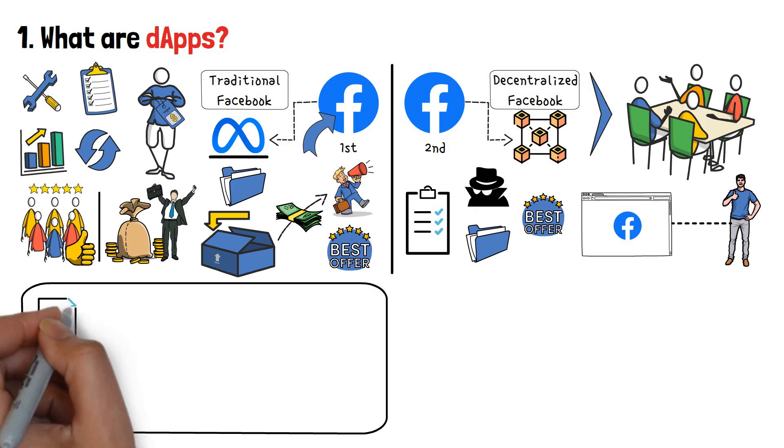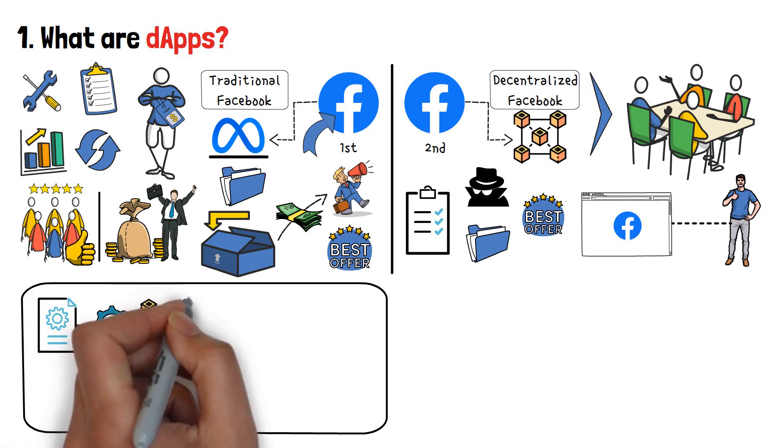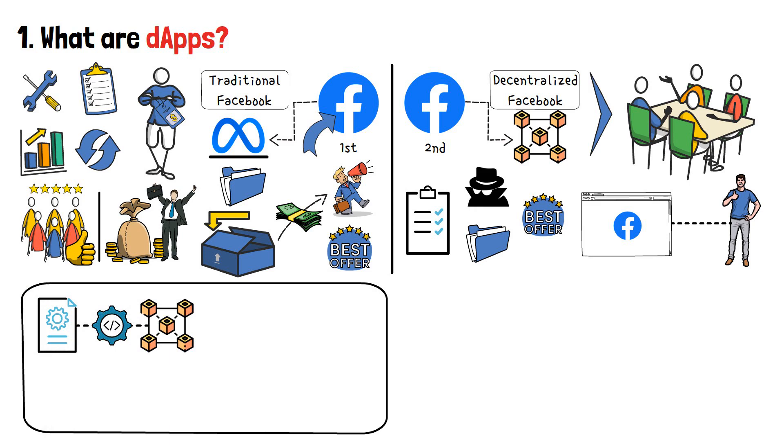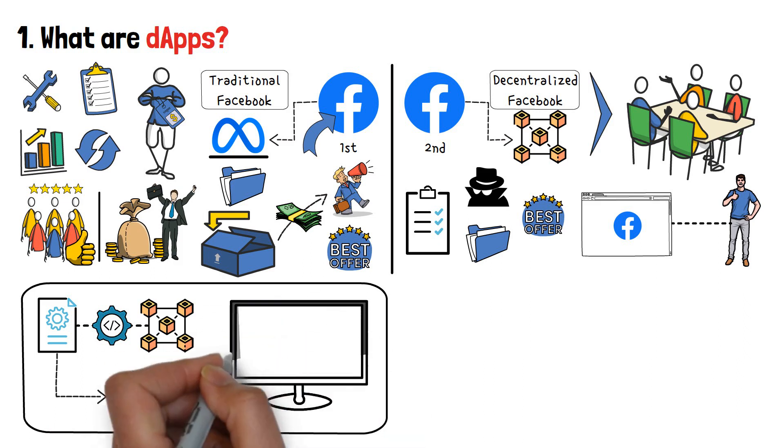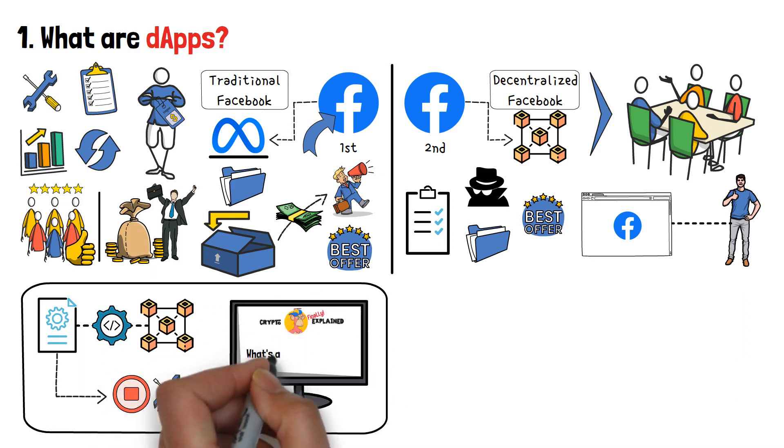All dApps are run with the help of smart contracts. These are automated agreements that are programmed and set on the blockchain. Generally speaking, once a smart contract is engaged, it cannot be stopped, changed or altered. If you'd like to learn more about smart contracts, make sure to check my dedicated video on the topic.